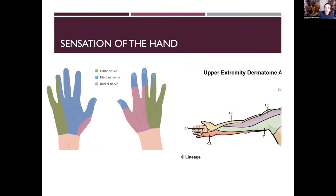To review sensation of the hand: C6, C7, and C8 dermatomes across the hand are very helpful for a quick sensation test to determine if there's spinal nerve involvement. We also need to be aware of the ulnar, median, and radial nerve sensory distributions on the hand and wrist.